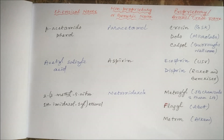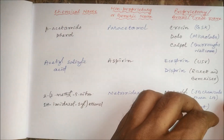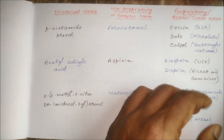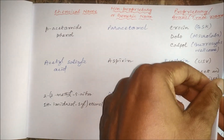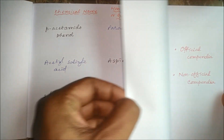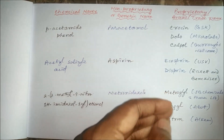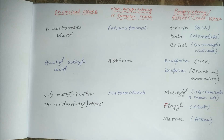And there are several more examples. So this is the difference between chemical name, non-proprietary name, and proprietary or brand name. Thank you.